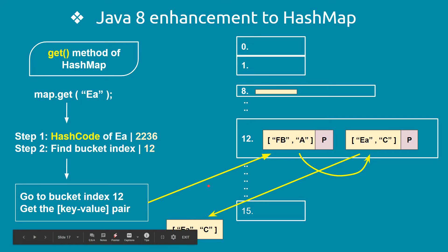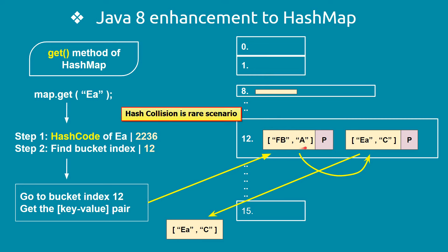In general, a HashMap ideally should have only one node per bucket. But hash collisions can cause a bucket to have multiple nodes, which degrades performance since JVM has to traverse them one by one. That is why in Java 8, the Java team enhanced the HashMap to handle this scenario better.